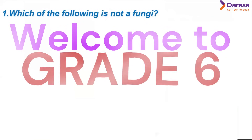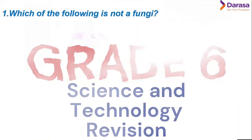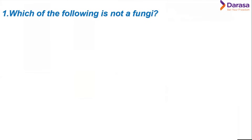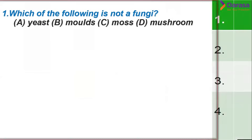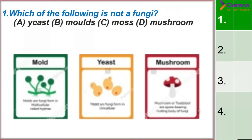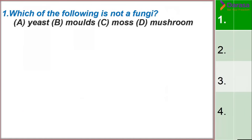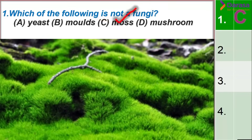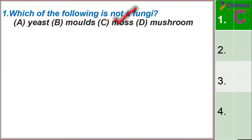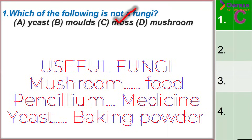Question 1: Which of the following is NOT a fungi? We are given choices: yeast, molds, moss, and mushroom. The correct answer is moss. The rest — yeast, molds, and mushroom — are all fungi.